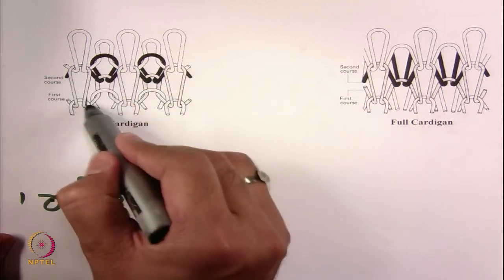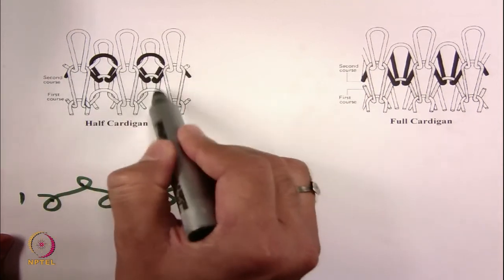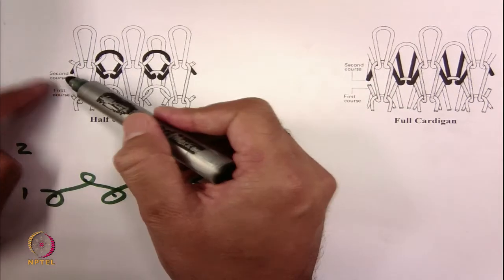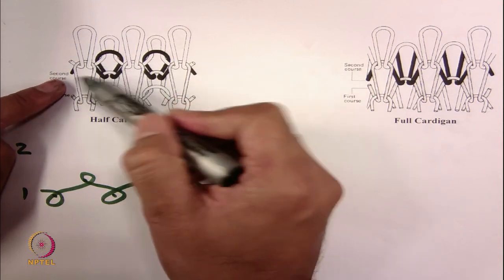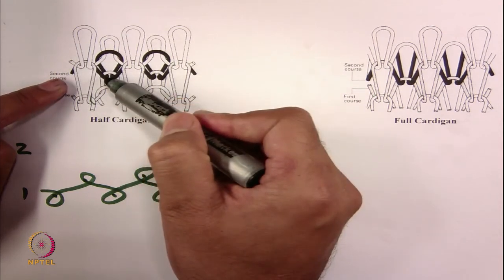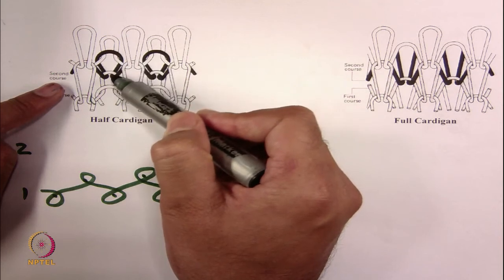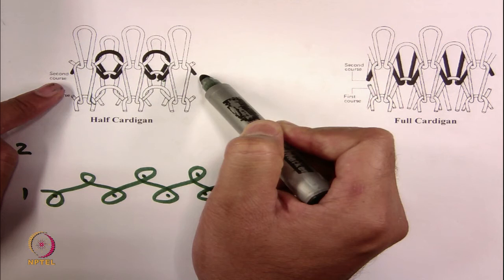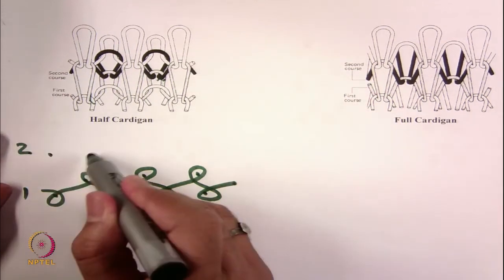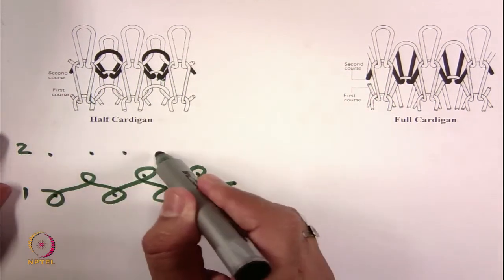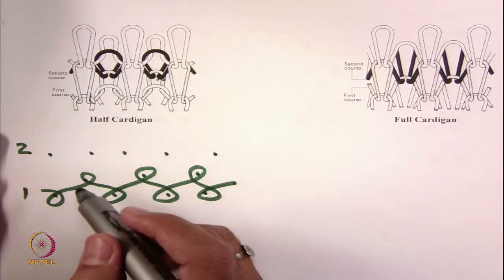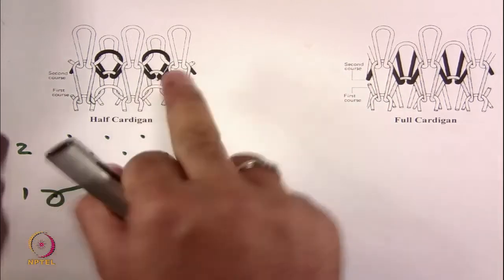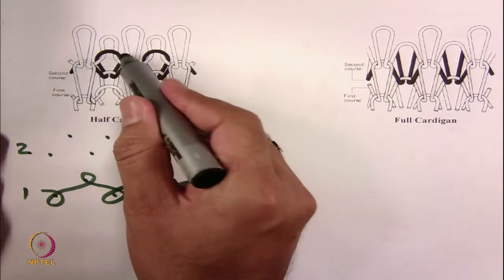In the first course, all beds are knitting. You can see here: this is the technical front, then back, then technical front, then back — this is how it is knitting. In the second course, if you see the black color yarn: this is making tuck, then loop, then tuck, then loop, then tuck. Basically, the front bed needles are making tuck and the back bed needles are making loops in the second course.